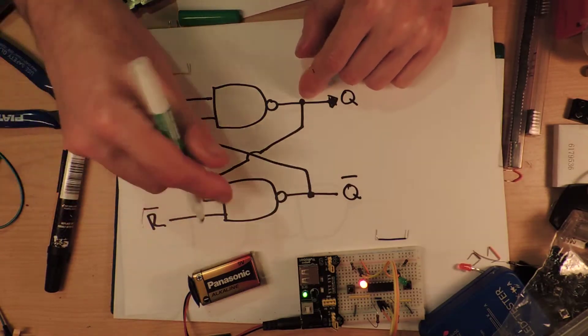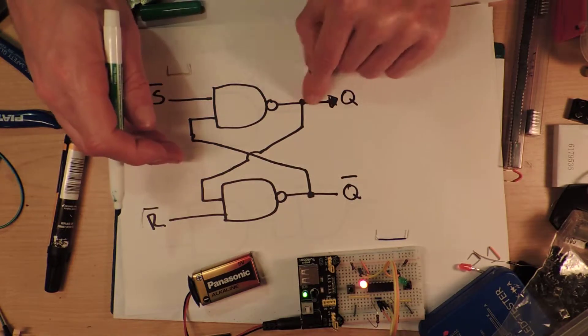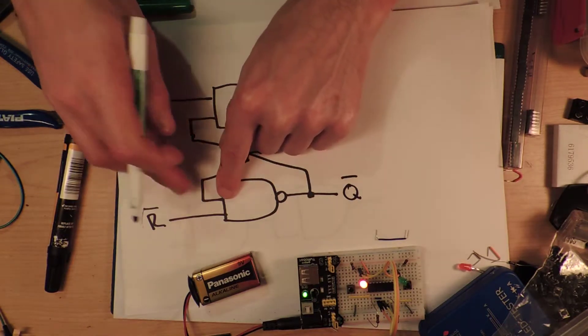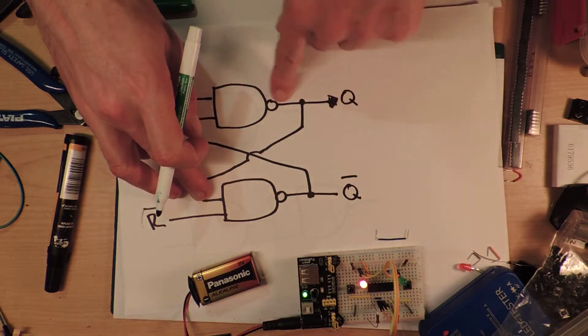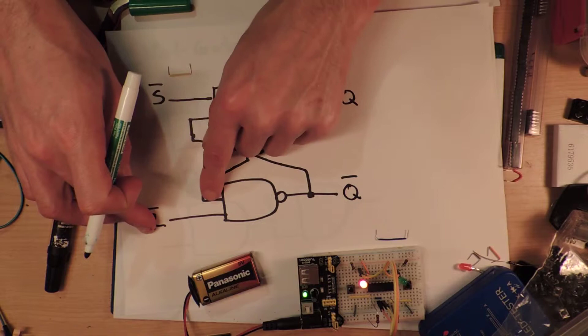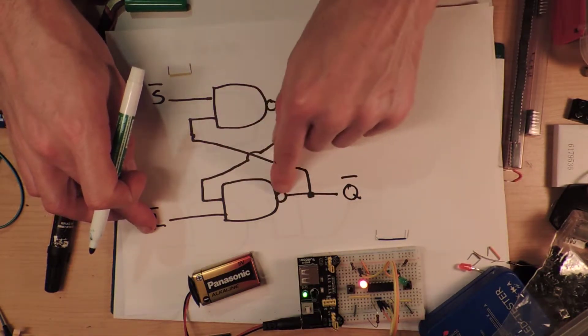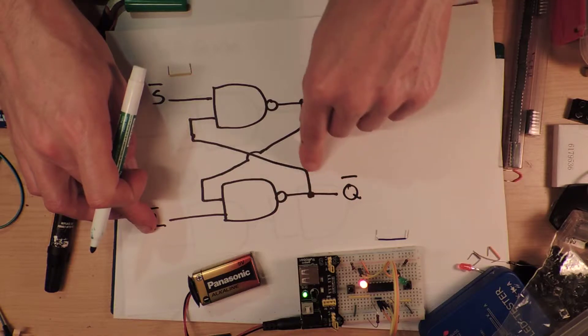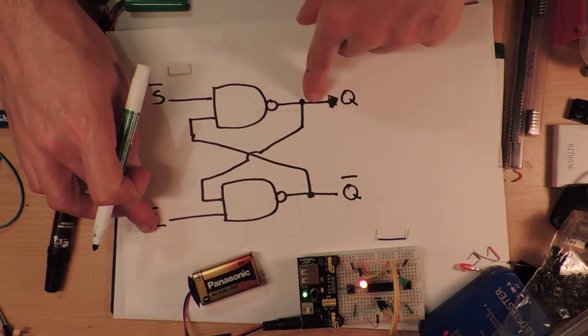So if this is high, the output, and in this case here, let's say if this one is high at the moment, then the output of this is going to be low. Because the output of this is being fed into the input of here. Since they're both high, it's inverting the output. And so if this input here is low, then this input here is going to be low, and so the output is going to be high.